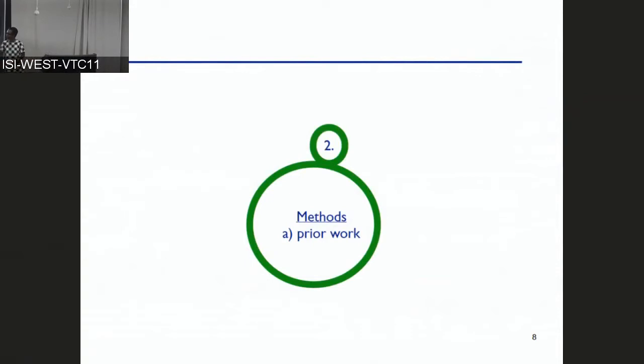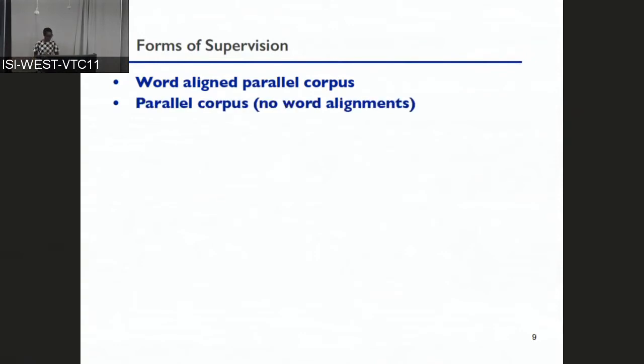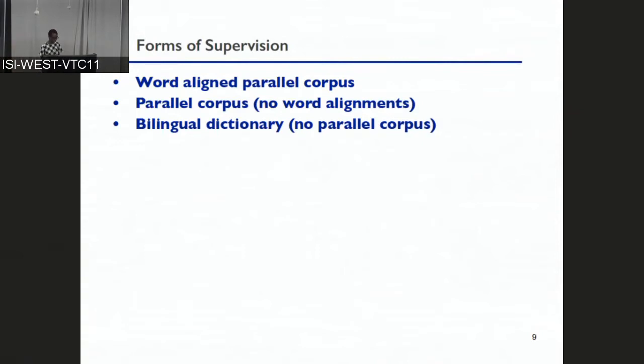Let's take a look at some methods, briefly starting with prior work. Various methods have been proposed that require different forms of supervision. The most expensive one requires a word-aligned parallel corpus — pairs of sentences that are translations of each other, with word-level annotations of which words are translations. Slightly cheaper is requiring a parallel corpus but without word-level annotations. Some methods only require a bilingual dictionary without needing a parallel corpus. And lastly, there are methods that are completely unsupervised.